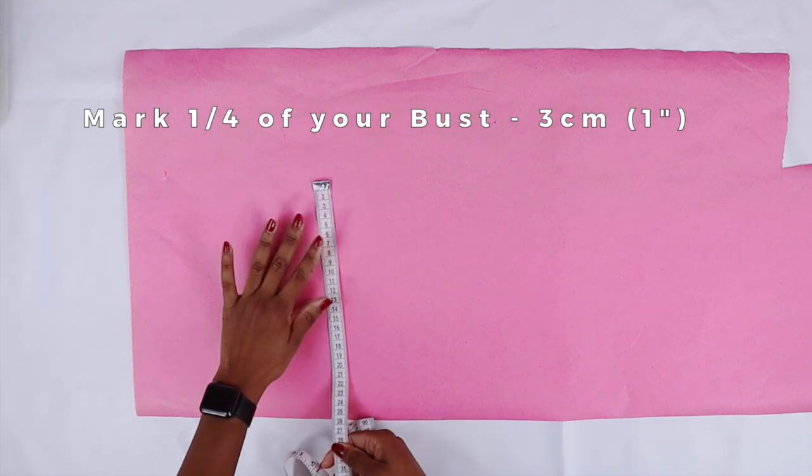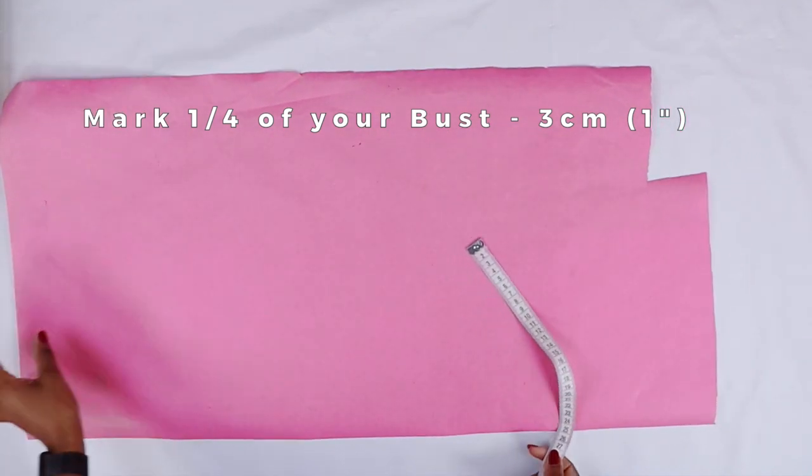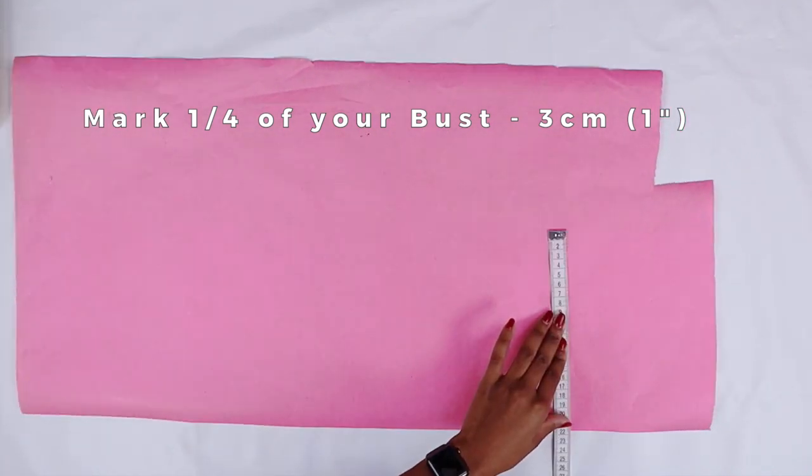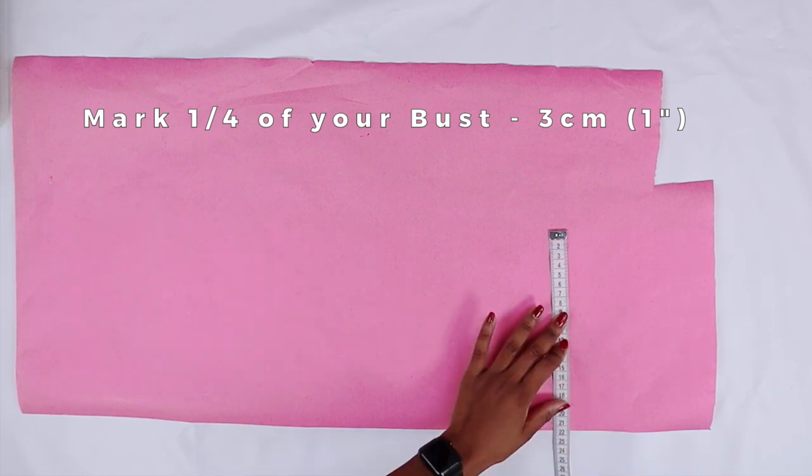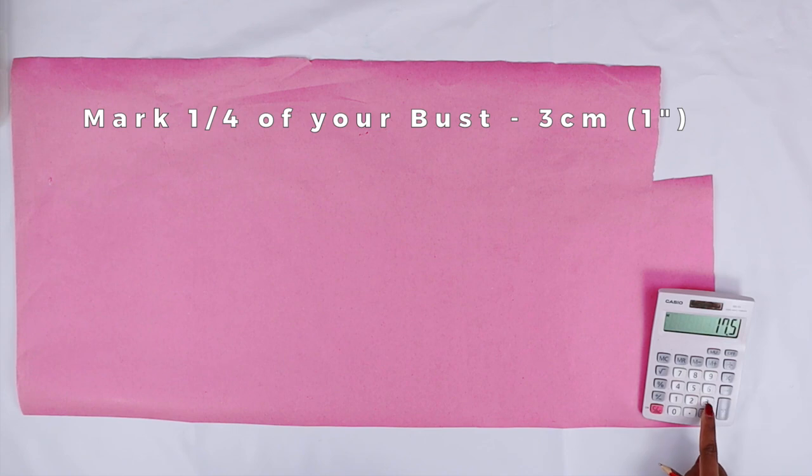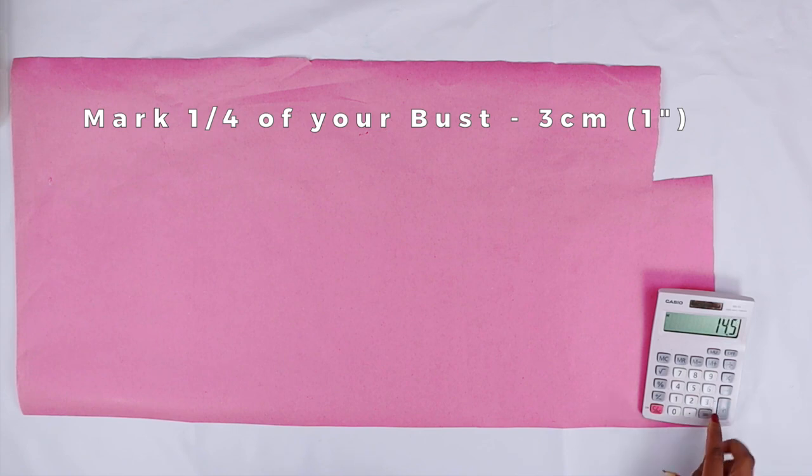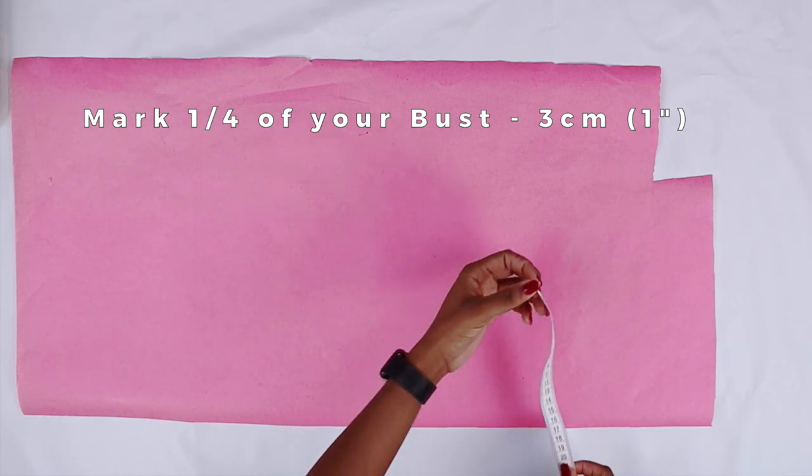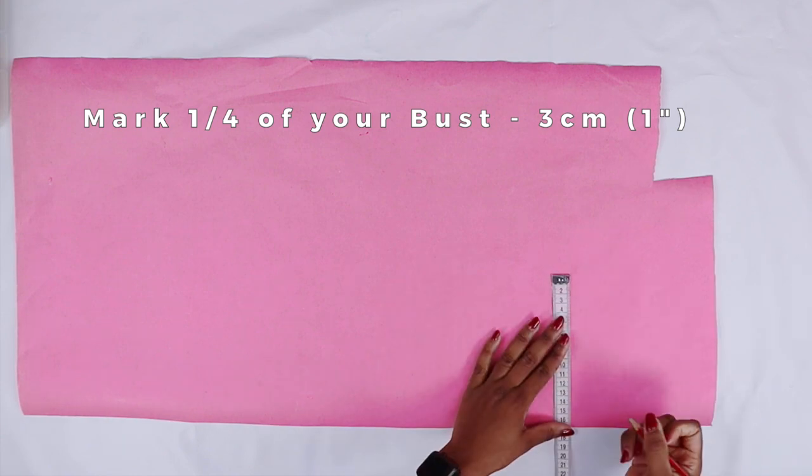We're going to start off by measuring one quarter of your bust measurement. So mine is 17.5 centimeters. Mine is 17.5 minus 3 centimeters, so in that case mine is going to be 14.5 centimeters.